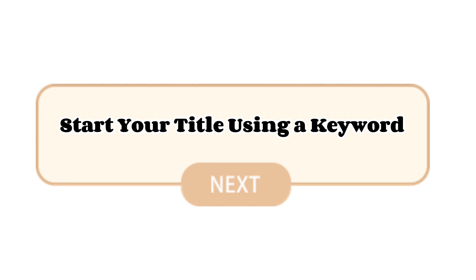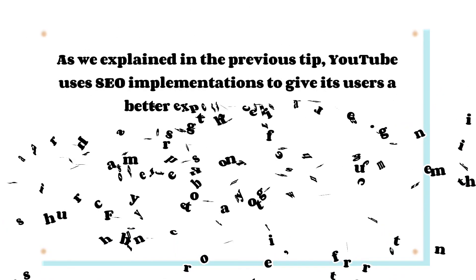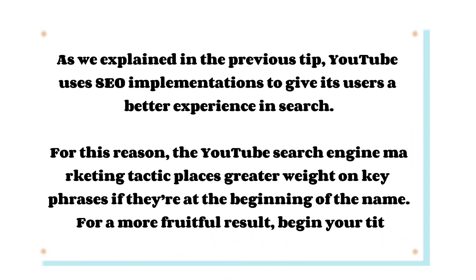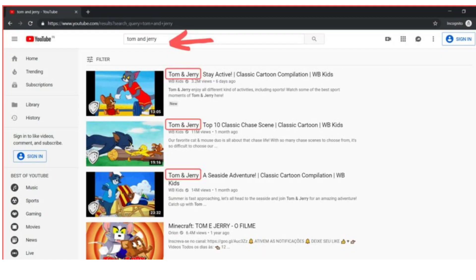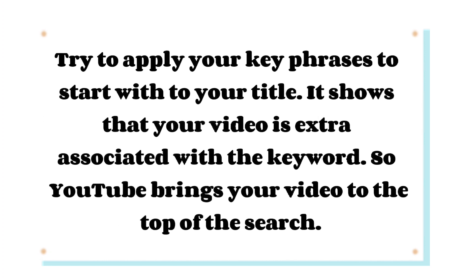Tip 2: Start Your Title Using a Keyword. YouTube uses SEO to give its users a better search experience. The YouTube search engine places greater weight on key phrases if they appear at the beginning of the title. Try to apply your keywords at the start of your title — it shows that your video is more associated with the keyword, so YouTube brings your video to the top of search results.